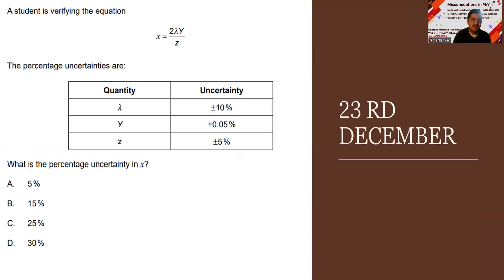A student is verifying the equation x equal to 2 lambda y by z. The percentage uncertainties are given. What is the percentage uncertainty in x? You need to decide and give across here. There is an equation, there is a methodology. If one variable depends on other few variables, how do you do with it so that you can use it and then finally get the answer.